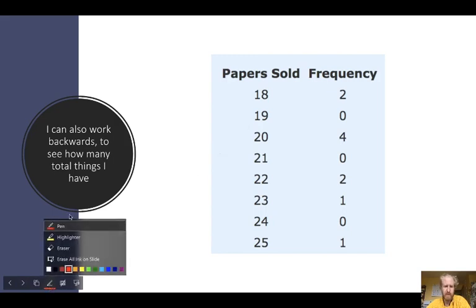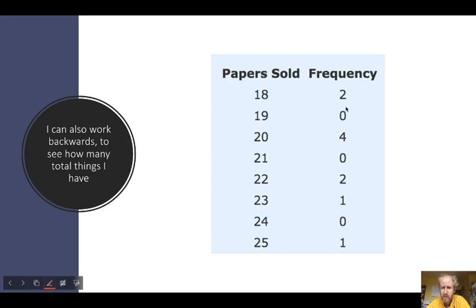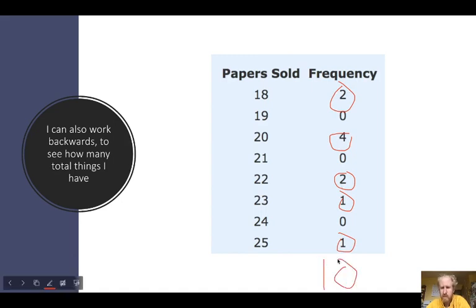Frequency tables are also good in that you can work backwards. If I want to see how many total things I have, I just add up the frequencies. So 2 plus 4 plus 2 plus 1 plus 1 is 6, 8, 10. So there are 10 total items.